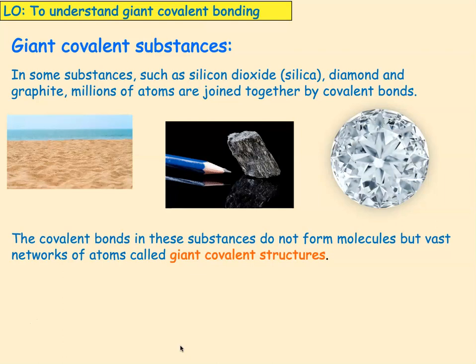We met a giant structure when we were doing ionic bonding — that was a giant ionic lattice. We met a giant structure when we were talking about metals. This is a third one. If we can think back to the properties of the giant ionic lattice and the giant metallic substance, then you might be able to predict some of the properties of these giant substances.